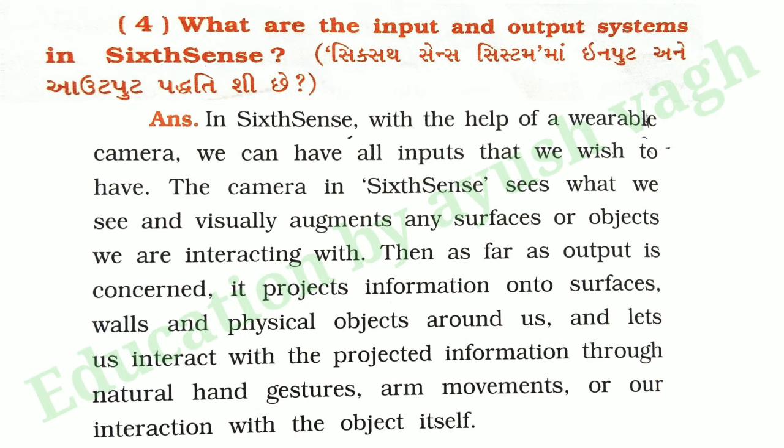Question 4: What are the input and output systems in a sixth sense? Answer: In a sixth sense, with the help of a variable camera, we can have all inputs that we wish to have. The camera in a sixth sense sees what we see and visually augments any surfaces or objects we are interacting with. As far as the output is concerned, it projects information onto surfaces, walls and physical objects around us, and lets us interact with projected information through natural hand gestures, arm movements, or our interaction with the object itself.